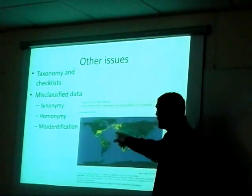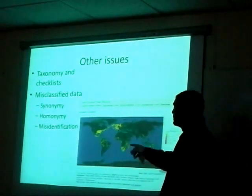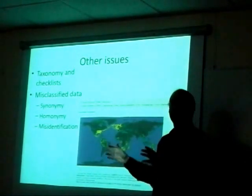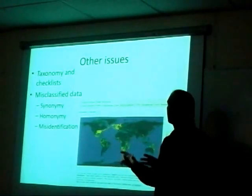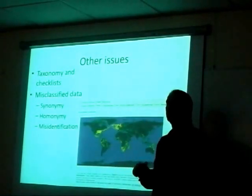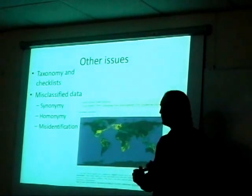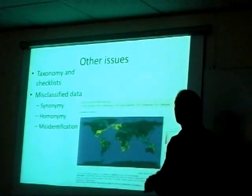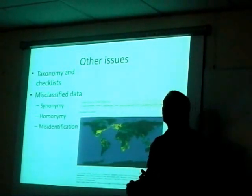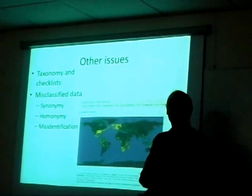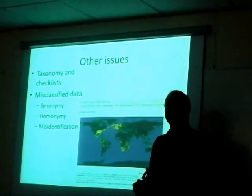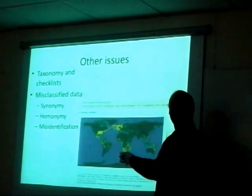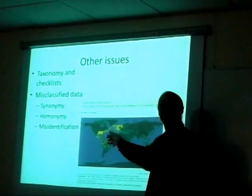This map is the data from GBIF using a search for Poseidonia. Poseidonia is a plant and it's also a marine bivalve. So the same generic name is actually applied in the plant kingdom and in the animal kingdom — one's a terrestrial plant, one's a marine invertebrate. When we do a search, we get terrestrial plant and marine invertebrate data just by searching for that name.